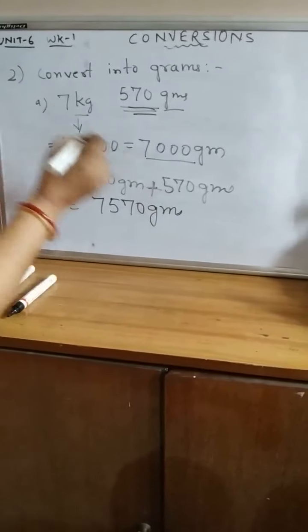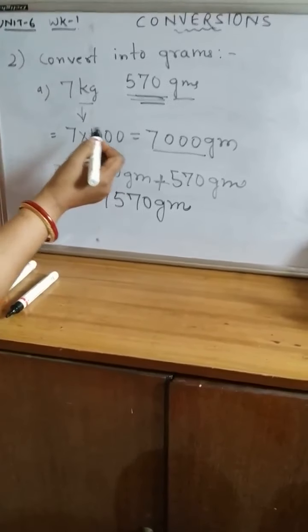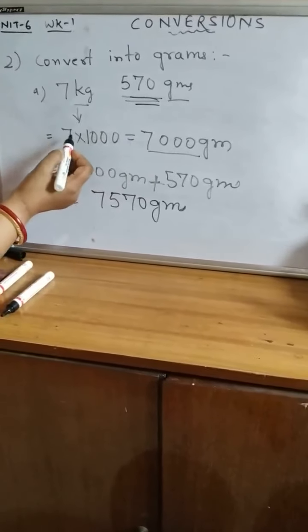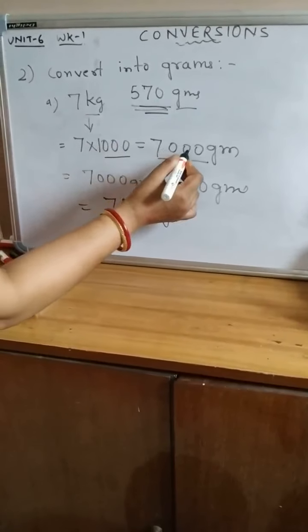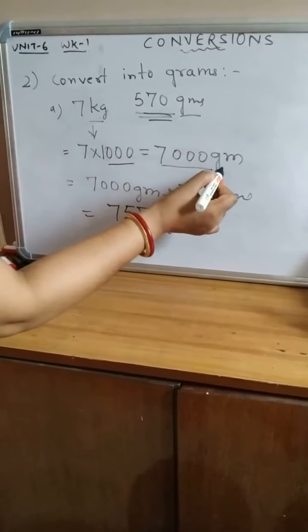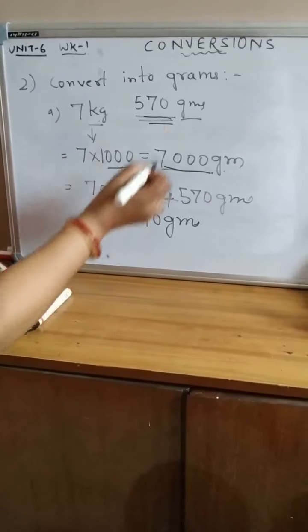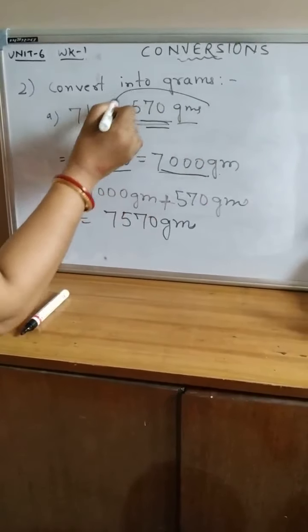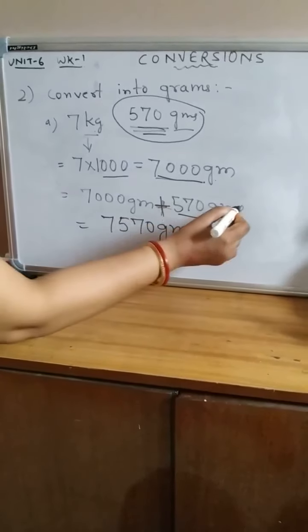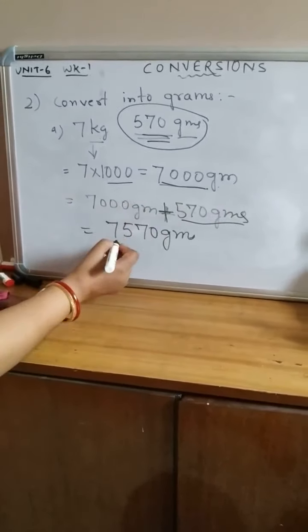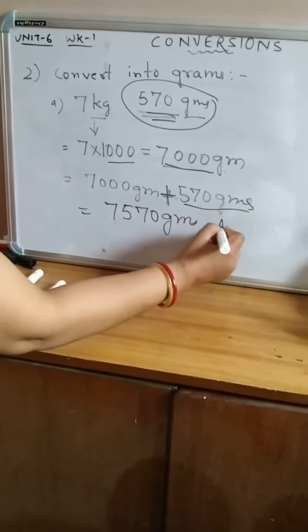Here 7 kilograms is converted into grams by multiplying 7 by 1000, giving a product of 7,000. Then this 7,000 grams is added with 570 grams. After addition we get 7,570 grams. This is the answer.